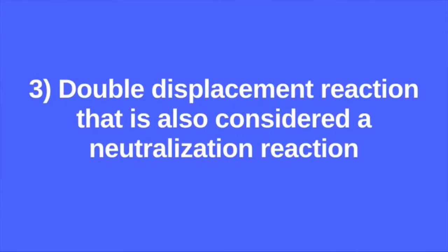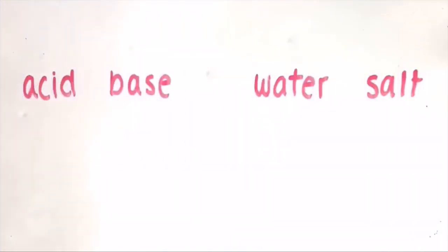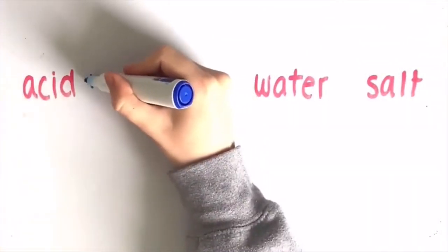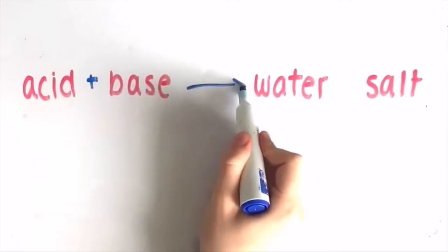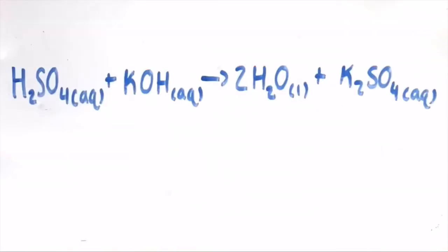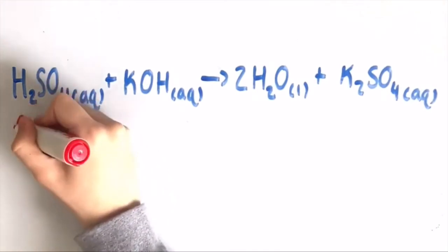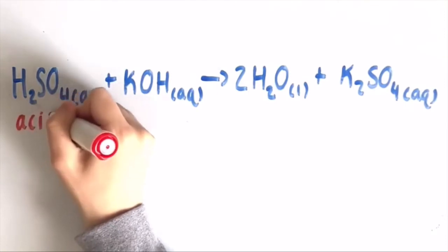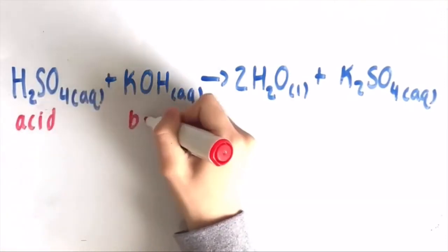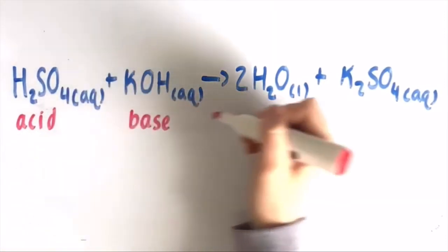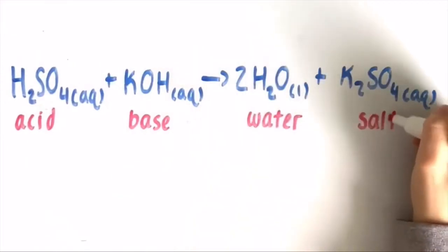Thirdly, we have a double displacement reaction that is also considered a neutralization reaction. In this reaction, an acid is added to a base to yield water and salt. An example would be sulfuric acid plus potassium hydroxide yields water and potassium sulfate. The acid is sulfuric acid, the base is potassium hydroxide, and potassium sulfate is the salt.